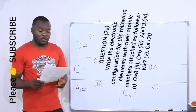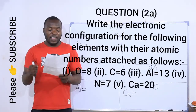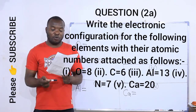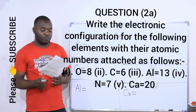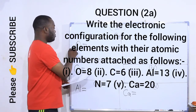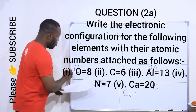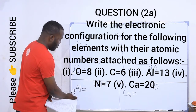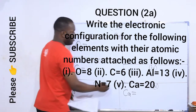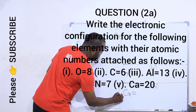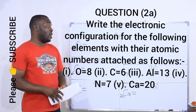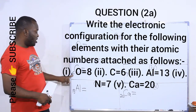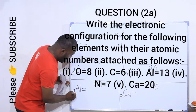Question number 2A says: write the electronic configuration for the following elements with their atomic numbers as follows. Oxygen is given as 8. Carbon is given as 6. Aluminium is given as 13. Nitrogen is given as 7. And Calcium is given as 20. We are asked to write the electronic configuration for these elements, and the atomic numbers are given to us.